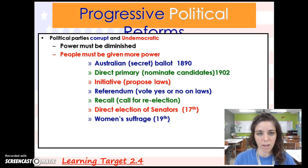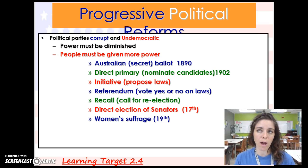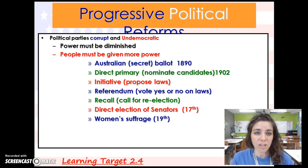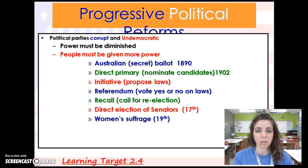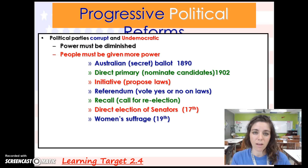The direct primary, in 1902, is where you nominate and vote on who's going to be the actual candidate to run — similar to today's presidential primaries that happen before the general election. An initiative gives people more power by allowing them to propose a law. A referendum lets voters say yes or no on a law directly, putting the decision back in the people's hands instead of the political parties.